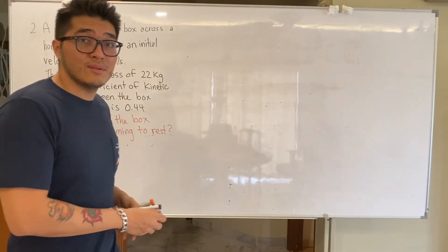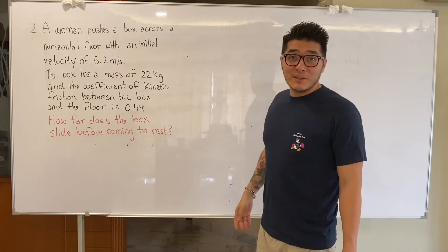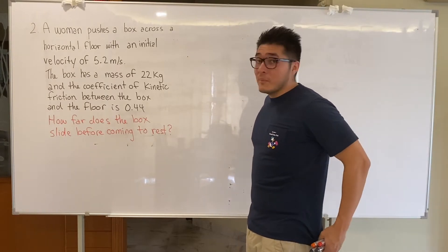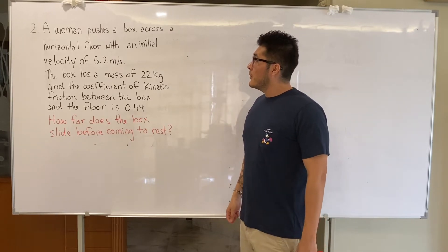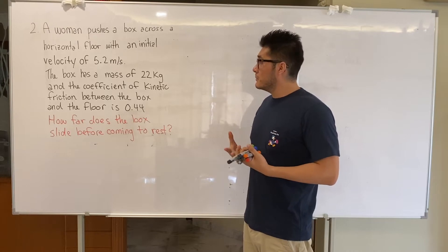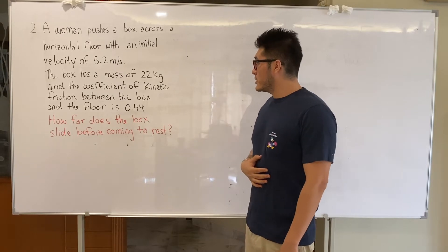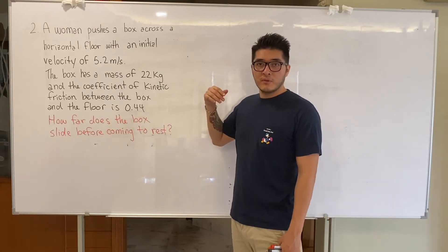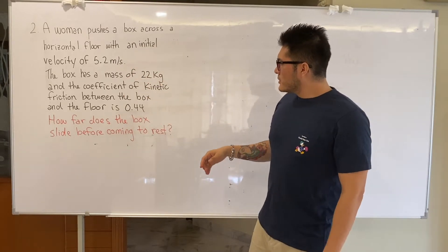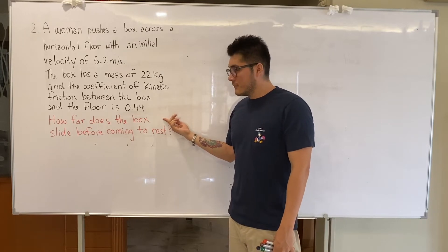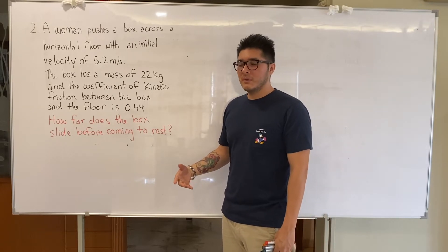Welcome back to Digital Physics. We're going to do example two. In the last example we had a man, so now we're going to have a woman. A woman pushes the box across the horizontal floor with an initial velocity of 5.2 meters per second. The box has a mass of 22 kilograms and the coefficient of kinetic friction between the box and the floor is 0.44. The question is asking us how far does the box slide before coming to rest — in other words, it comes to a complete stop.